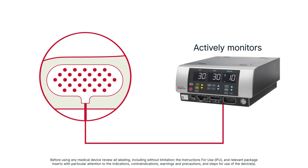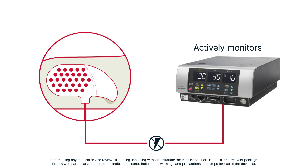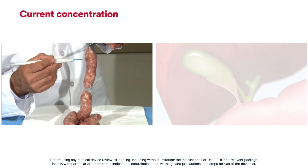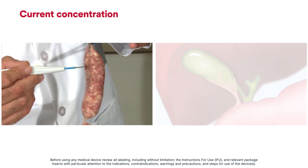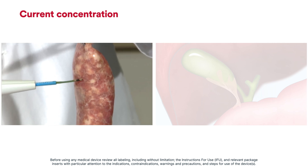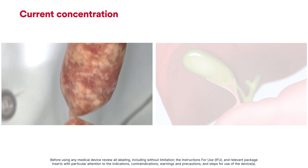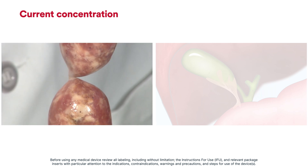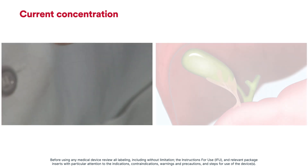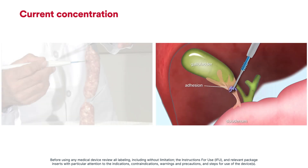Most modern electrosurgery systems monitor resistance at the return electrode to detect adequate patient contact. These generators will stop the flow of electricity as a safety measure to prevent injury from concentrated current flow at the single-use sticky pad. This video demonstrates the effects of current concentration. Though the energy is being applied to the top sausage, current passes through all the sausages to the return electrode on the benchtop. As current passes between the links, the narrow cross section concentrates the current, causing unintended damage. In a practical example of taking down an adhesion between the gallbladder and duodenum, applying energy can cause unintended damage on the other end of the adhesion.